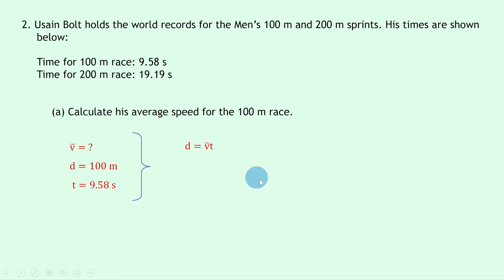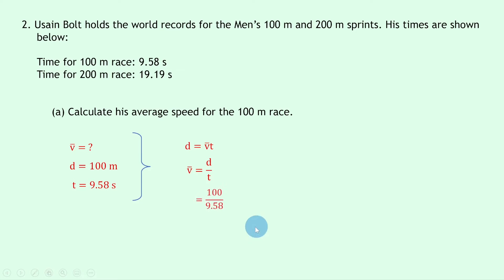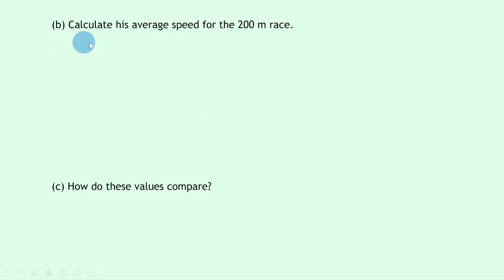Writing down our equation for average speed: d equals v-bar times t. Rearranging for v-bar, we divide both sides by t to get v-bar equals d over t. Substituting in the numbers gives us 100 divided by 9.58, and if you put that into your calculator you should get an answer of 10.4 meters per second to one decimal place.